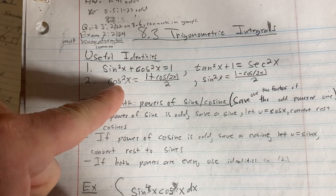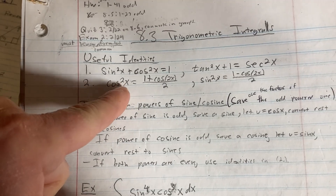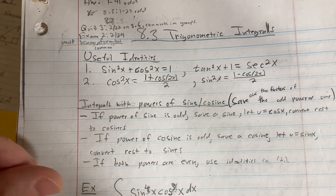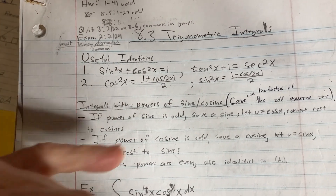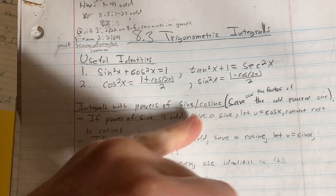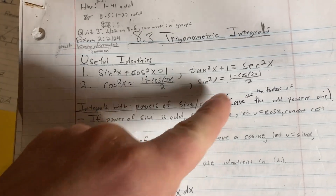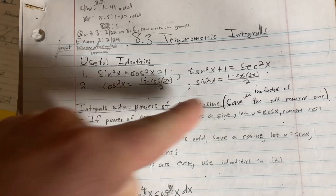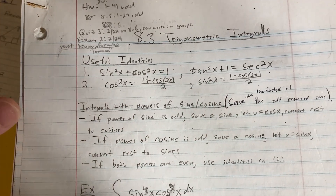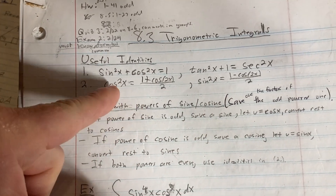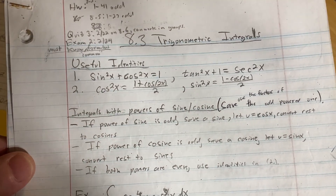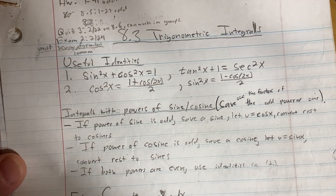Then this one here: cosine squared x is (1 plus cosine 2x) over 2, and sine squared x is (1 minus cosine 2x) over 2. So these are very different — the cosine has the plus, the sine has the minus.